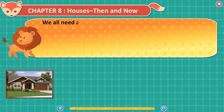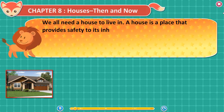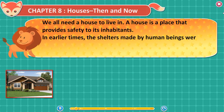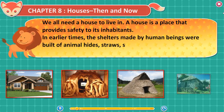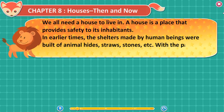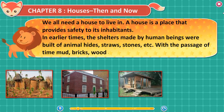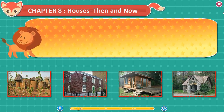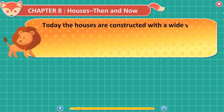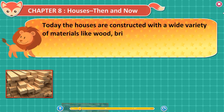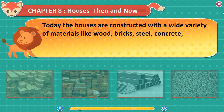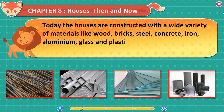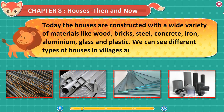We all need a house to live in. A house is a place that provides safety to its inhabitants. In earlier times, the shelters made by human beings were built of animal hides, straws, stones, etc. With the passage of time, mud, bricks, wood, and stone came into use. Today, houses are constructed with a wide variety of materials like wood, bricks, steel, concrete, iron, aluminium, glass, and plastic. We can see different types of houses in villages and towns.